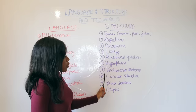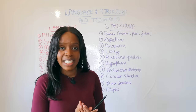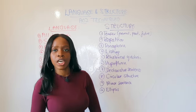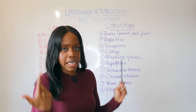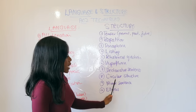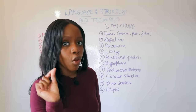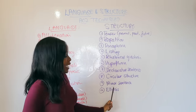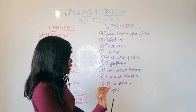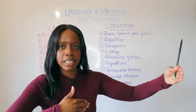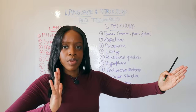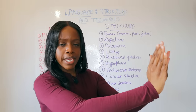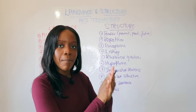The seventh technique — a personal favorite — is declarative sentences: a sentence that states a fact, feeling, or mood. Right now I'm speaking in a series of declarative sentences. If you're ever stuck with structure, default to the writer's use of a declarative sentence and you'll never go wrong. The eighth technique is circular structure — when the text starts and ends in a similar way. The ninth technique is the one-word sentence, called a minor sentence. A long sentence slows down the pace of the text, while a short sentence speeds it up, creating a jarring effect.